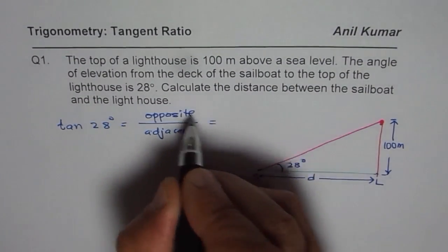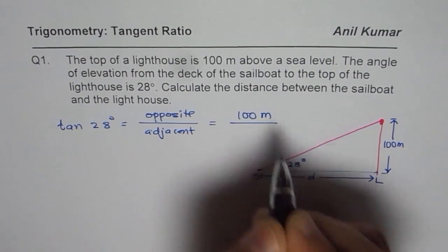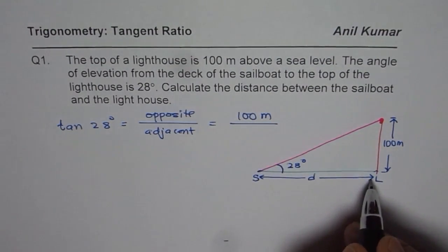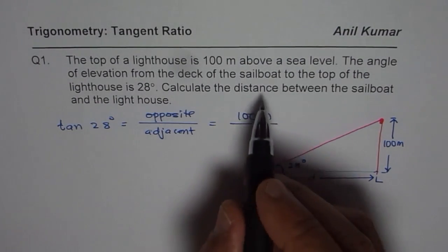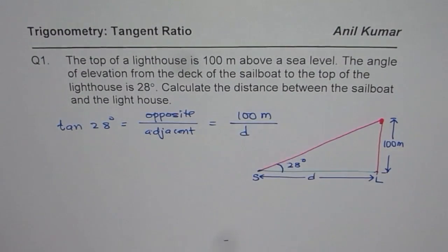So you can say the opposite side for us is 100 meters. So 100 meters divided by the side which we do not know, but we want to know. That is the distance between the sailboat and the lighthouse. Let us say that is D for us.